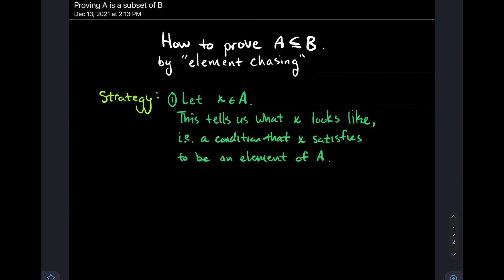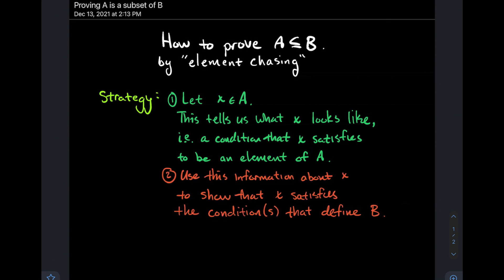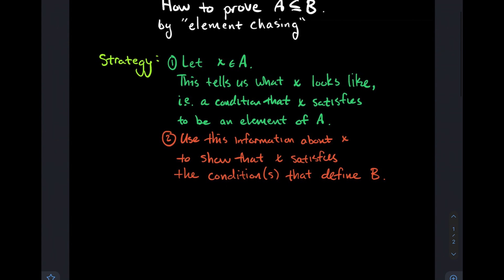We've got the condition that X satisfies to be an element of A, and that's something I can write down and start playing with. I want to try to manipulate that in order to say something about how X is related to B. That's the gist of step two: use that information about X to show that X satisfies whatever the defining conditions are for the set B. Let's look at a couple examples.